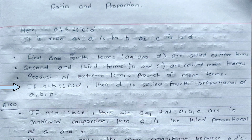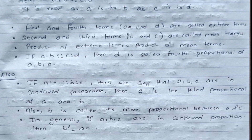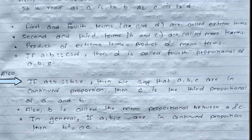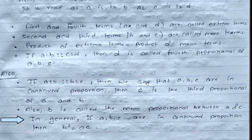The product of extreme terms equals the product of mean terms. If a is to b as c is to d, then d is called the fourth proportion of a, b, c. If a is to b as b is to c, then a, b, c are in continued proportion, and c is the third proportional of a and b. Also, b is called the mean proportion between a and c. In general, if a, b, c are in continued proportion, then b squared equals a times c.